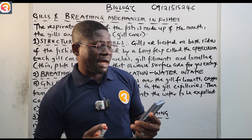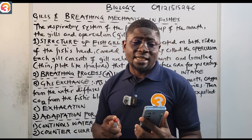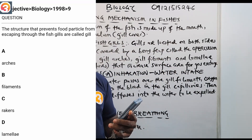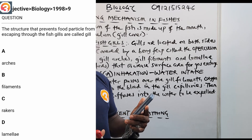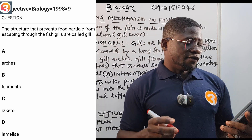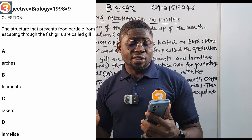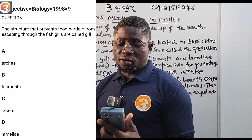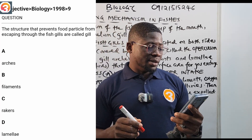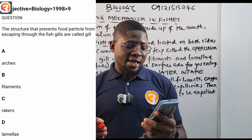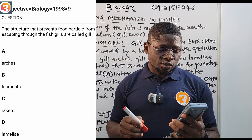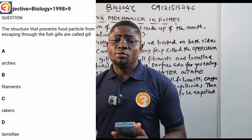Let us see a JAMB past question from the app — a biology 1998 question being shown on the screen right now. It says: the structure that prevents food particles from escaping through the fish gills are called — gill (A) arches, (B) filaments, (C) rakers, (D) laminae.